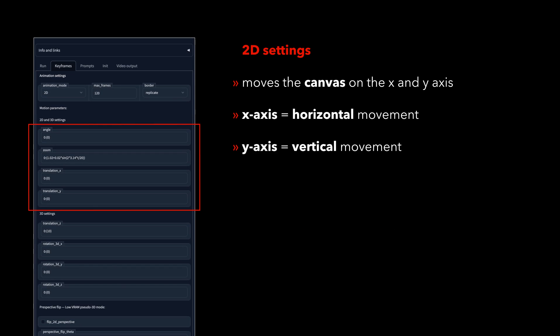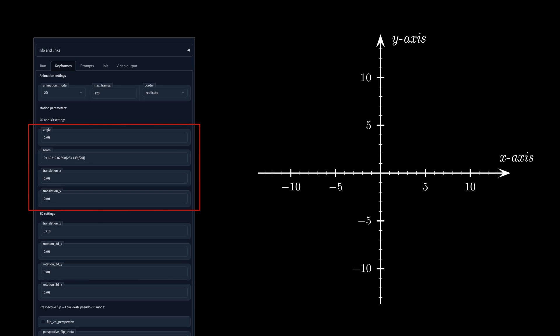Let's take a quick overview of the first part of the 2D parameters, where we will be moving our canvas, not the camera. Here we have control over the parallel motion along the X-axis, which is the horizontal movement, and the Y-axis, which is the vertical movement.